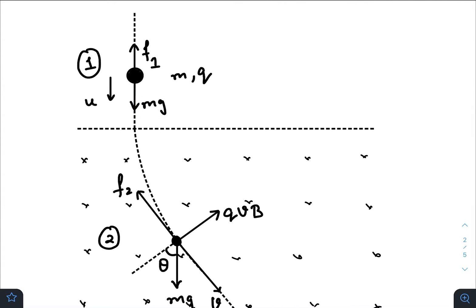So the gravitational force was balanced by the resistive force. Let the resistive force when it was coming down with speed u be f1. So of course in this case f1 equals mg.